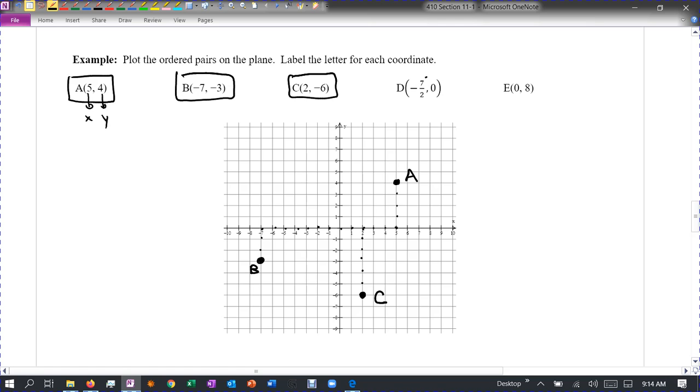D is negative seven halves. Now that's actually negative 3.5 on a calculator and then zero. So negative 3.5. So negative one, two, three. And I'm going to go halfway and then I'm not going to move anywhere on the Y. I'm just going to stay here. That's D.